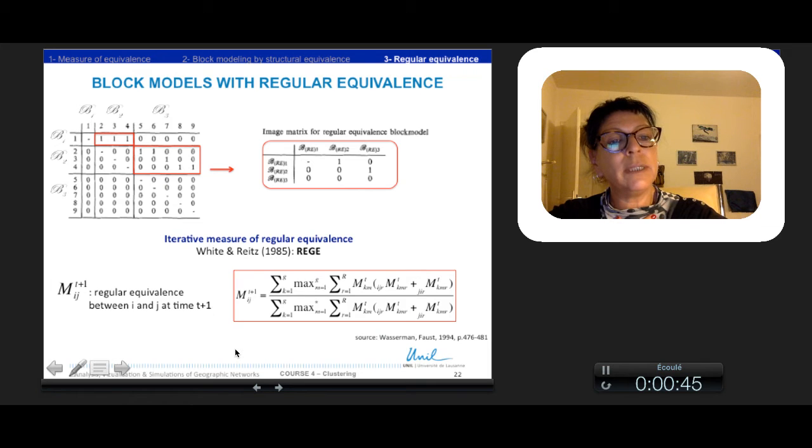With adjustment in light of equivalences of the adjacent nodes to and from members of the pairs, here k and m, the numerator corresponds to how i's ties to and from k actors can match with j's ties to and from the m actors.